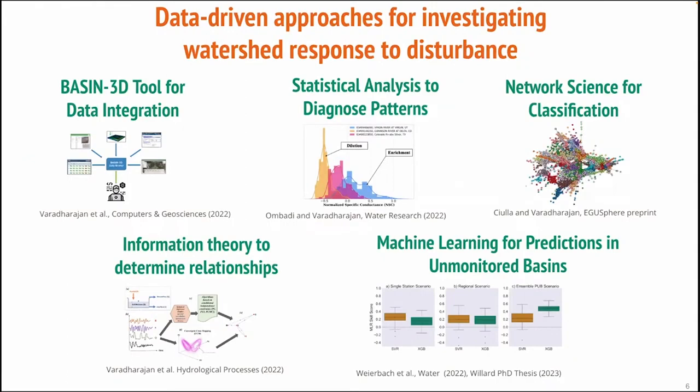In the past decade, data products that combine these datasets have become available, such as StreamCat, which provides information on hundreds of watershed traits that can be paired with streamflow and water quality data. To utilize these datasets, we use a variety of methods including a software tool based in R for integrating time series data across distributed sources, statistical analysis and network science to infer patterns, as well as information theory and machine learning to gain scientific understanding and make predictions.